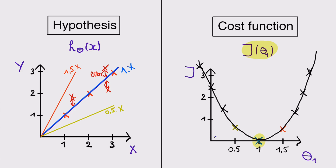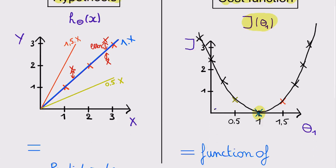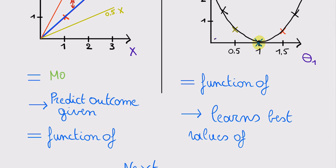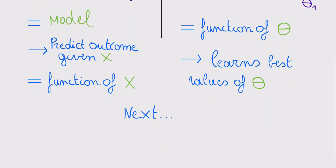It's important to point out the difference between the hypothesis and the cost function. The hypothesis is our model that we want to train — it predicts the outcome of unseen input values, for example the price of a car given that it has 300 horsepower. It is a function of x. The cost function, on the other hand, is a function of the parameters theta 0 and theta 1. It tells us the best values for the parameters so that our model can make accurate predictions.